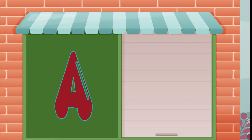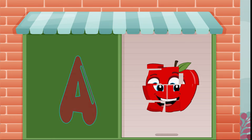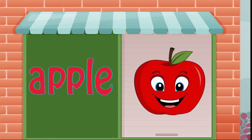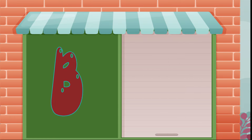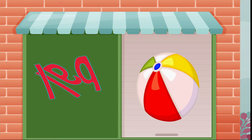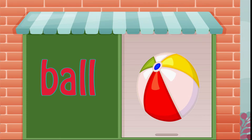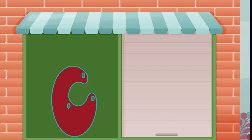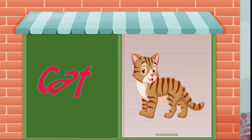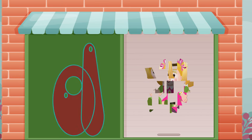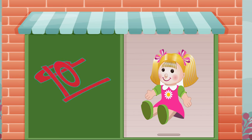A is for apple, a-a-apple. B is for ball, b-b-ball. C is for cat, c-c-cat. D is for doll, d-d-doll.